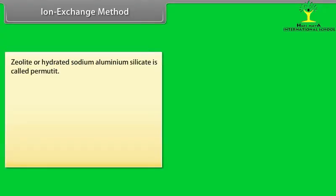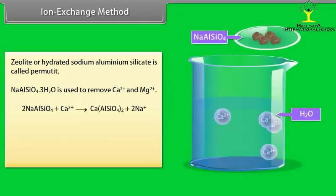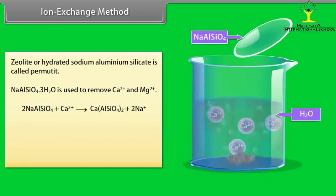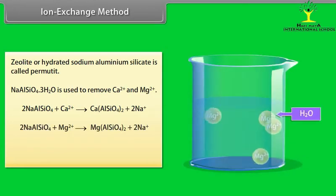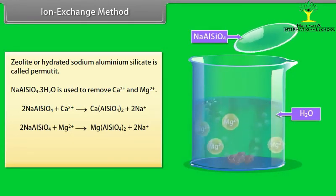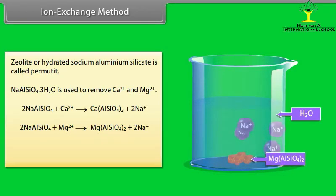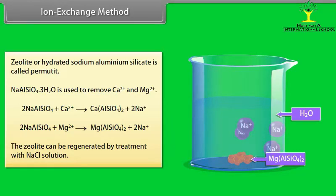Ion exchange method. Zeolite: Zeolite or hydrated sodium aluminium silicate is called permutate. NaAlSiO4·3H2O is used to remove Ca2+ and Mg2+. The zeolite can be regenerated by treatment with NaCl solution.